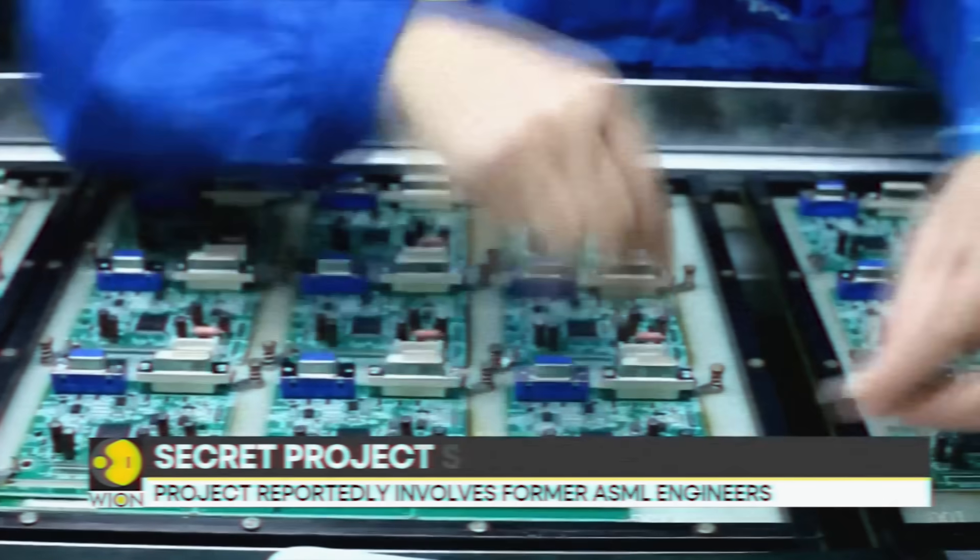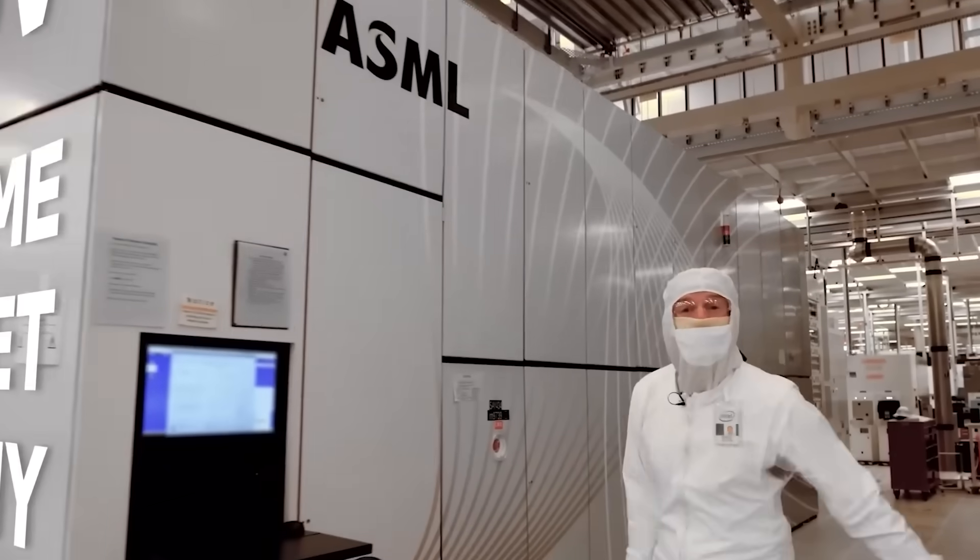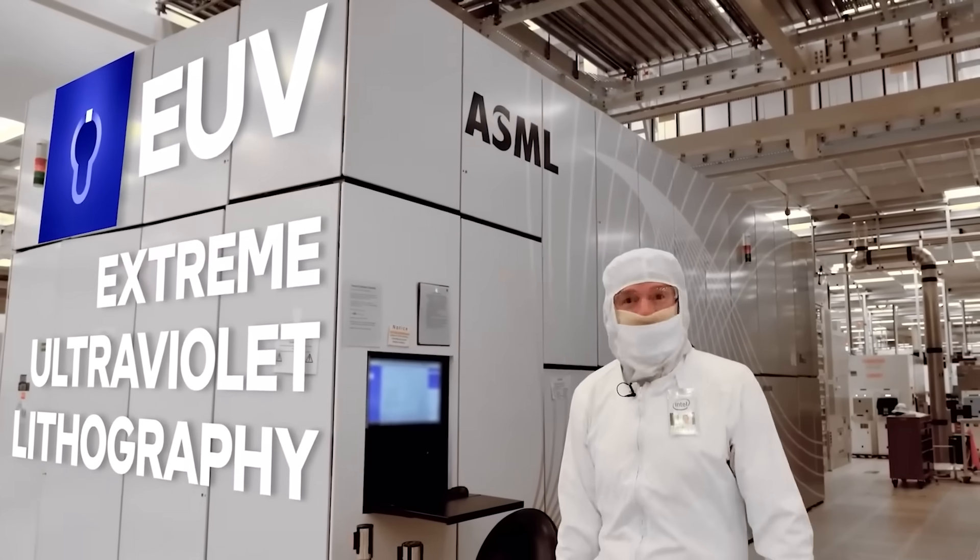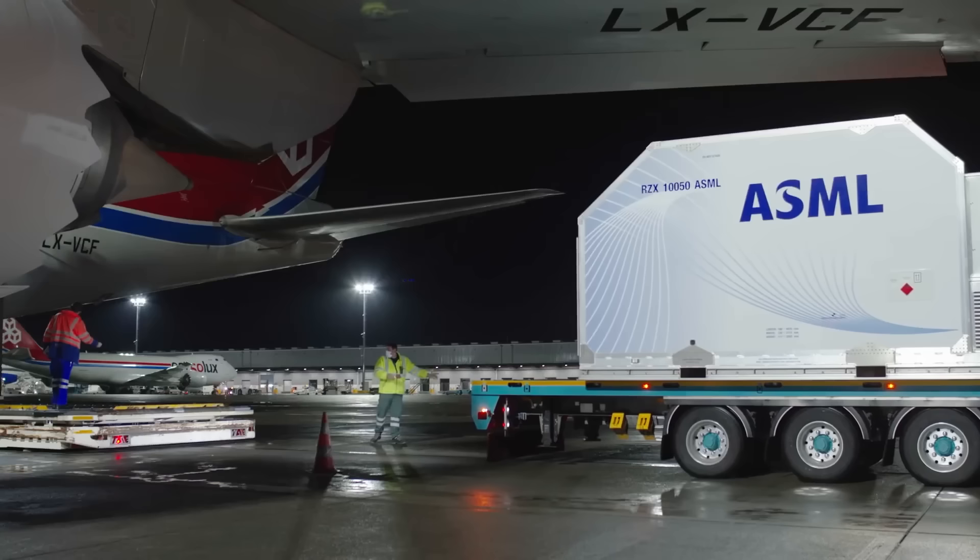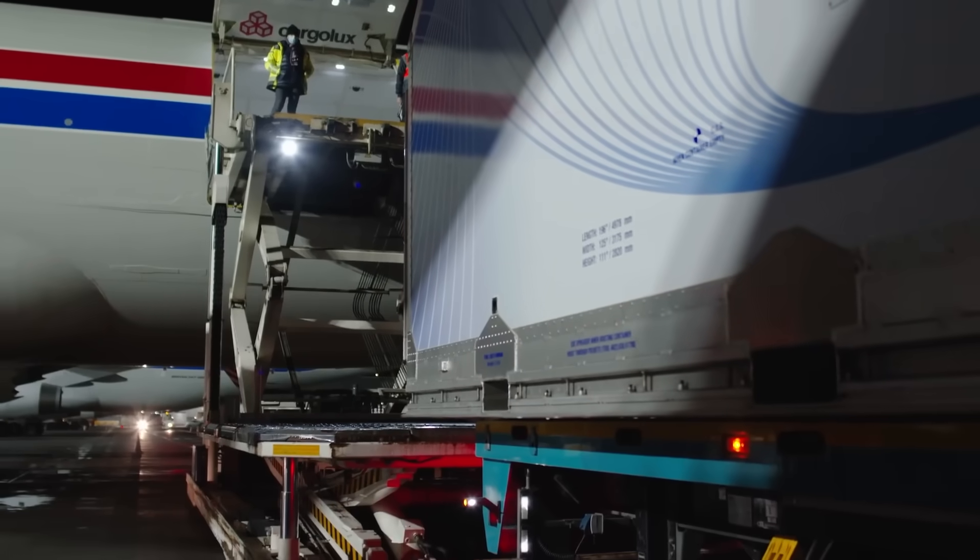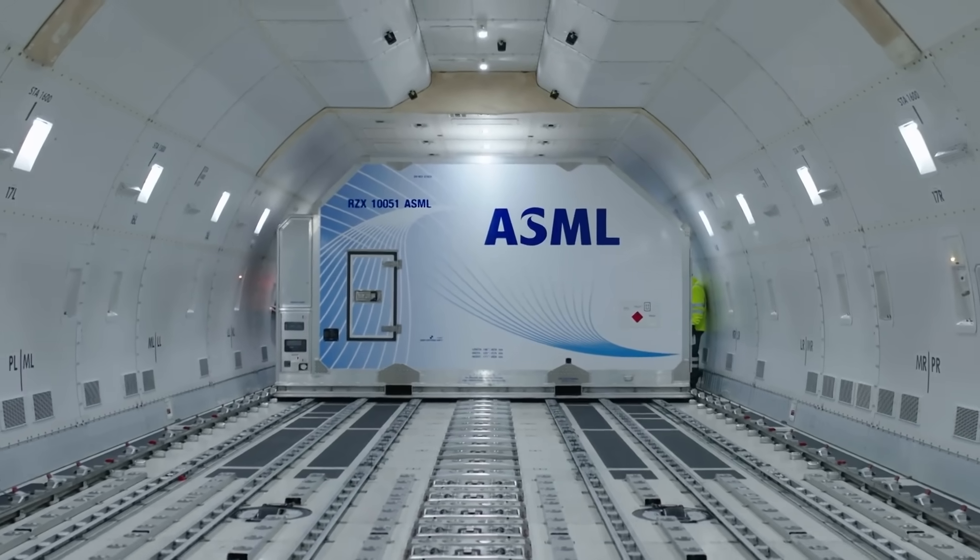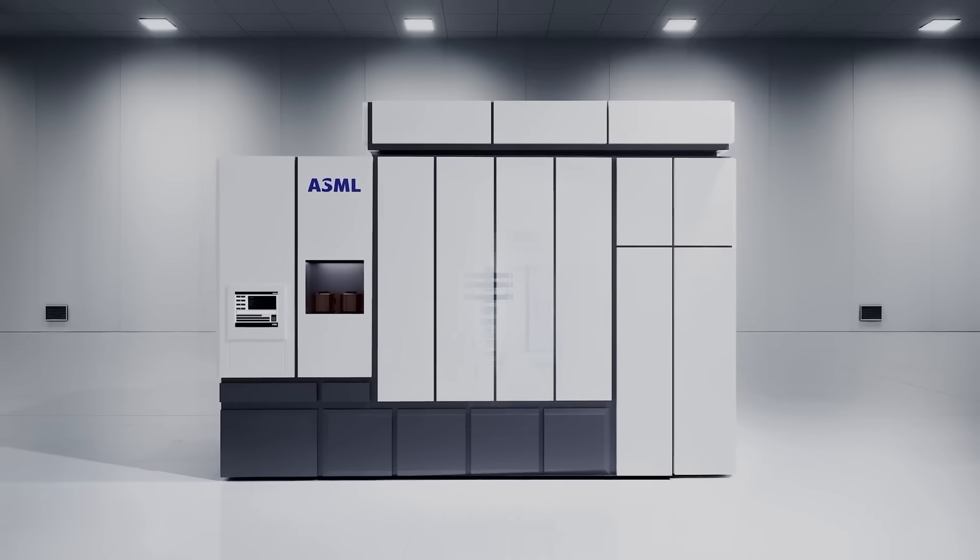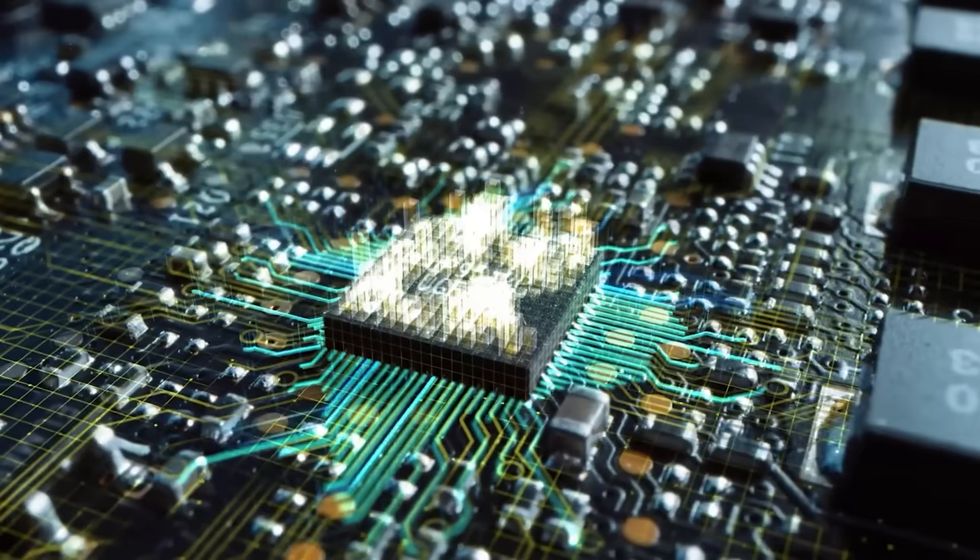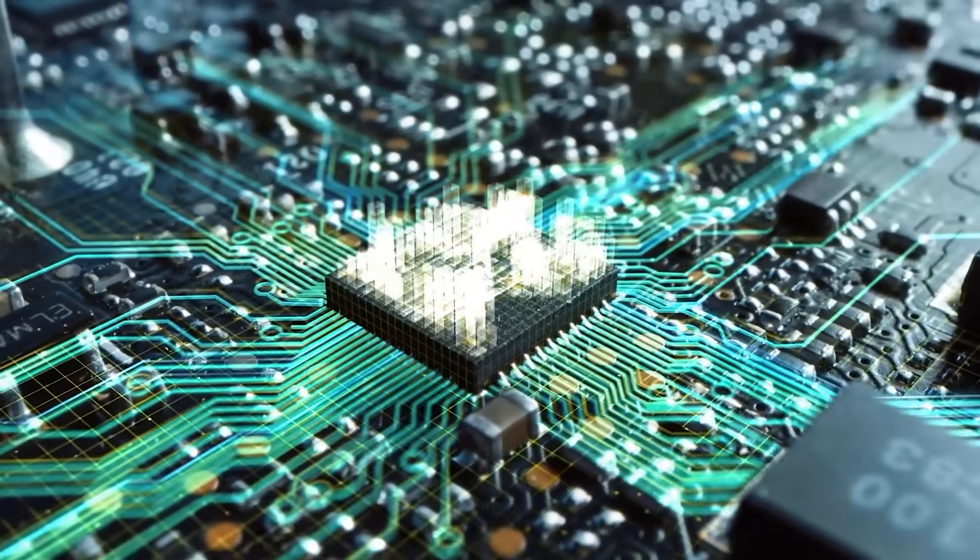This was something China simply could not obtain, not because of a lack of intelligence or engineering talent, but because the technology was locked behind a single company, ASML of the Netherlands, and protected by the most aggressive export control regime in modern history. As a result, EUV was treated as the final and immovable bottleneck. Without it, China could not manufacture the most advanced chips.